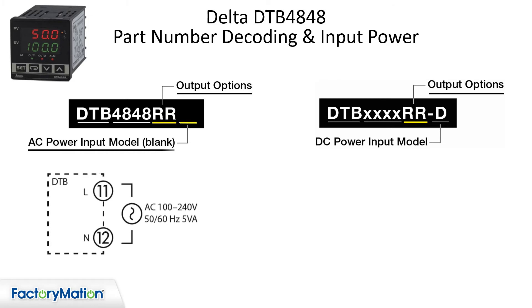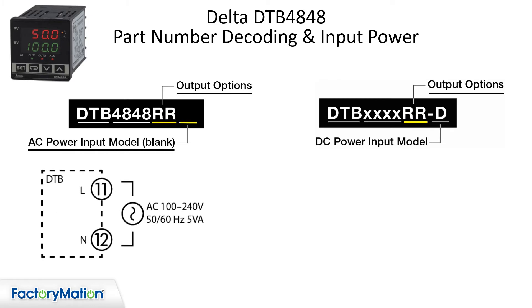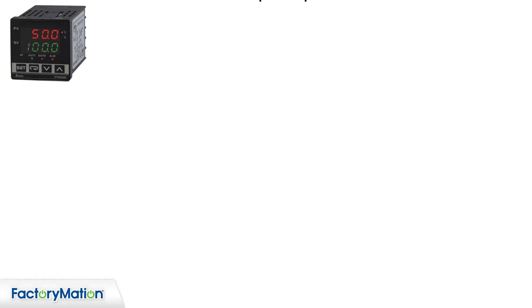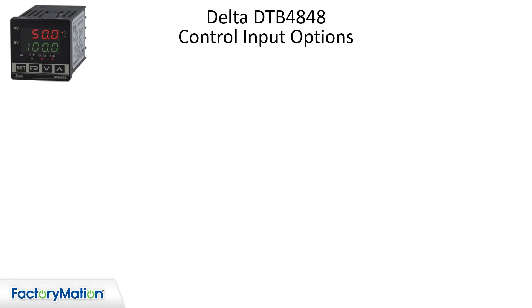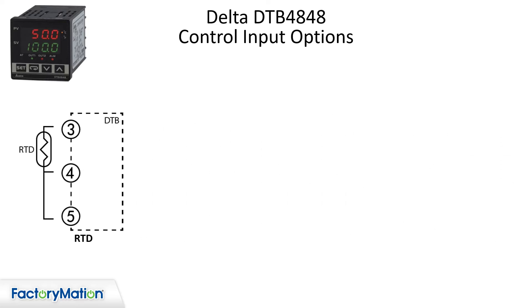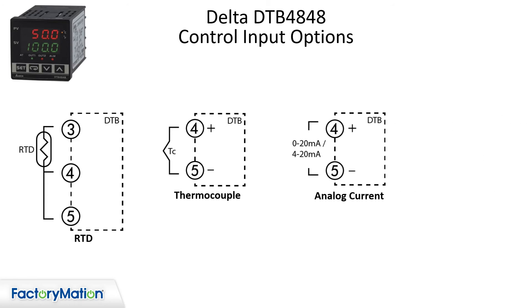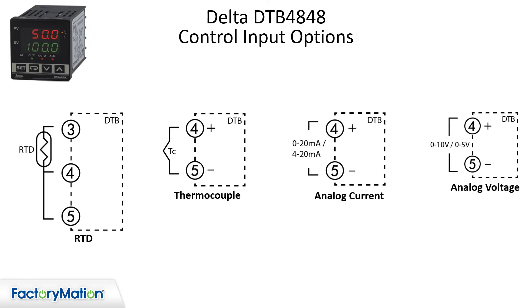The AC models are blank. The DC input models are designated with a D as the third character. The controller can accept different control inputs sharing the same terminals. The available inputs are RTD, thermocouple, analog current, and analog voltage.